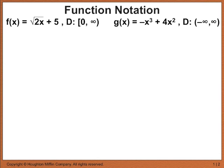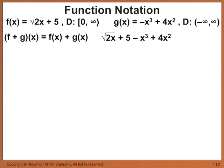On to function notation. One way to write the operation of adding one function to another is parentheses f plus g of x, and that's completely equivalent to f of x plus g of x. In this specific case, f of x plus g of x is simply adding g of x, which is negative x cubed plus 4x squared, to f of x, which is square root of 2x plus 5. So we end up with root 2x plus 5 minus x cubed plus 4x squared.